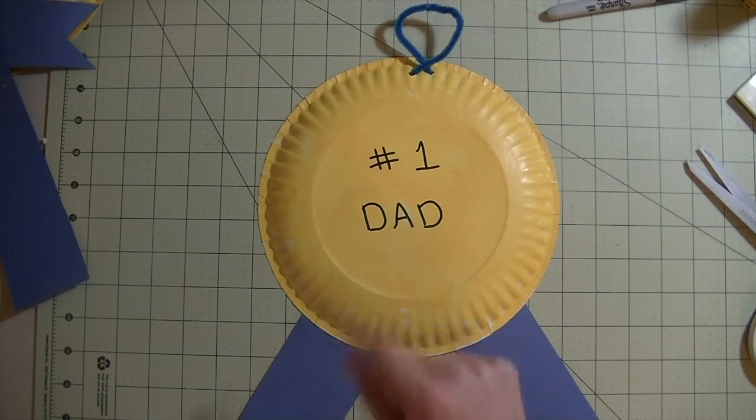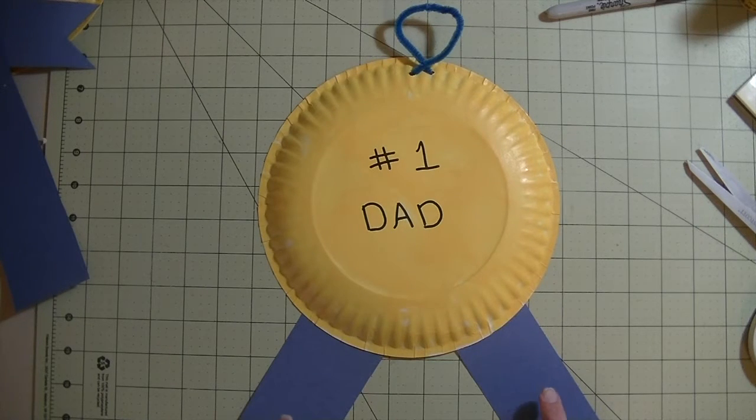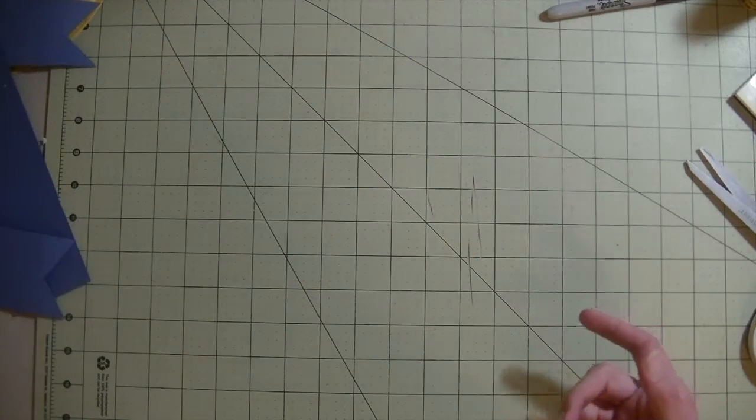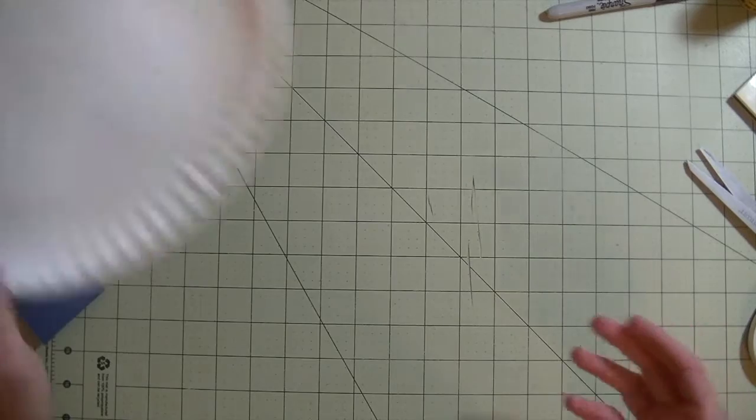The ribbon and a little pipe cleaner hanger. All right, so to get started you just need a really inexpensive paper plate. You want to paint it whatever color you like. I chose yellow and I did paint it on the outside of the plate.